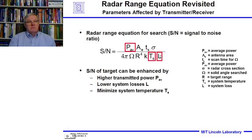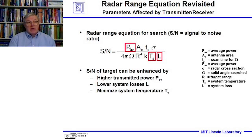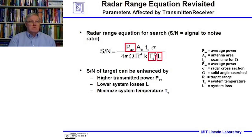We want the losses to be unity — ideally zero — and the system noise temperature to be low. It's hard to get very high power, and it's very hard to have very low system losses. The signal-to-noise ratio can be enhanced if we have higher transmitter power, low system losses, and minimize the system noise temperature.